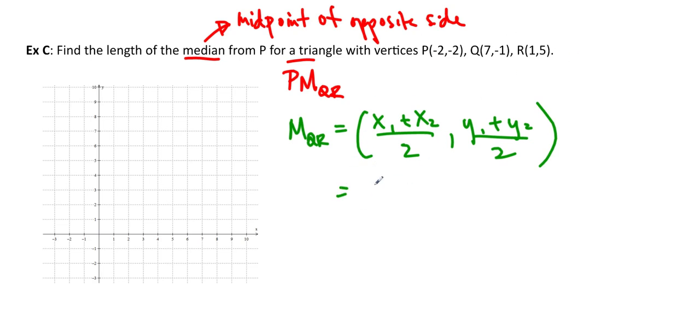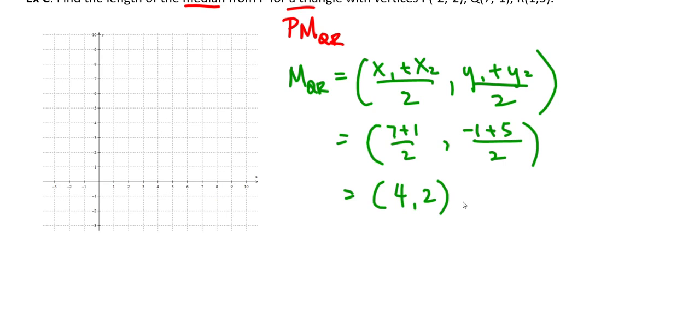So (-1 + 7)/2 or sorry, (-1 + 5)/2, so this ends up being (4, 2). And now I just have to find the length.